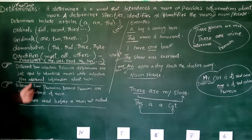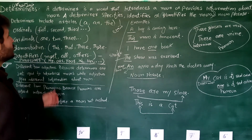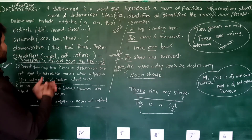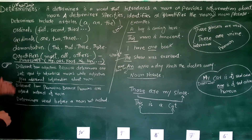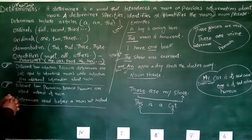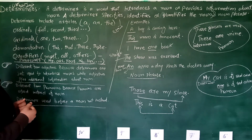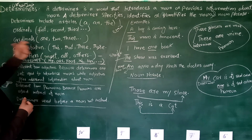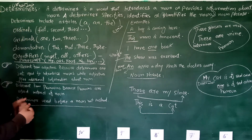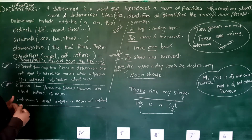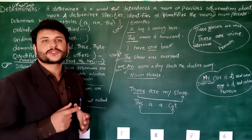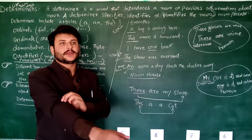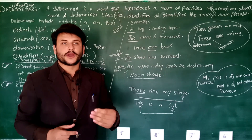A determiner can be articles. Dear viewers, we can use articles as determiners. We can also use ordinal numbers as determiners, we can also use cardinal numbers as determiners, we can use demonstratives as determiners, or quantifiers as well as possessives. We have highlighted some of the usage taken from English grammar - that we can name all these units or all these words as determiners and we can use them as determiners while shaping a sentence structure.